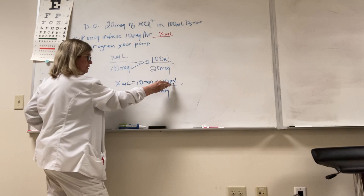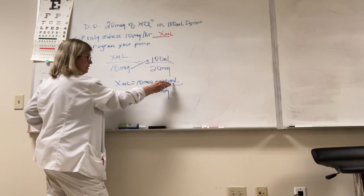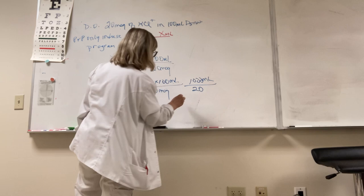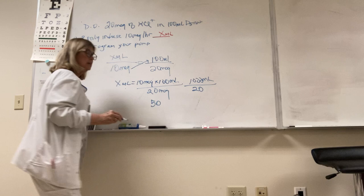Do I know if I have it set up right? Yes, I do, because I have milliequivalents cancel out. I'm left with mLs. It's what I'm looking for, so I'm in good shape. So 10 times 100 is 1,000 divided by 20, and I'm going to get 50.